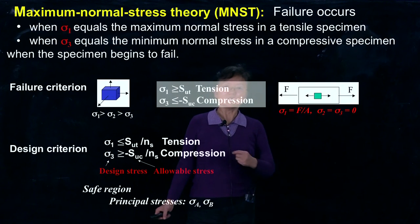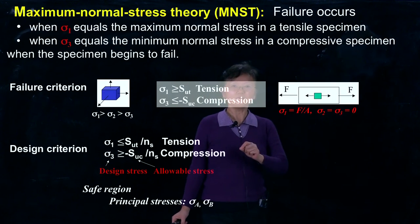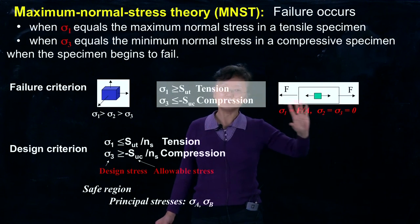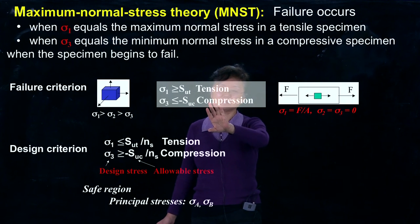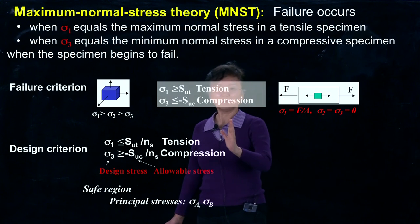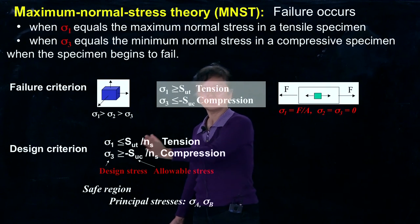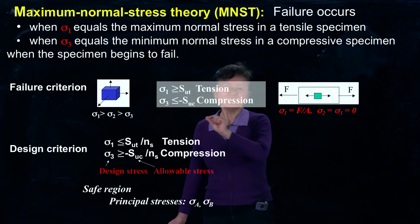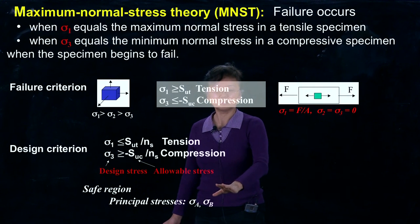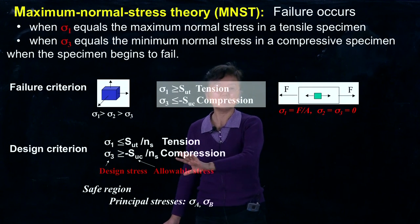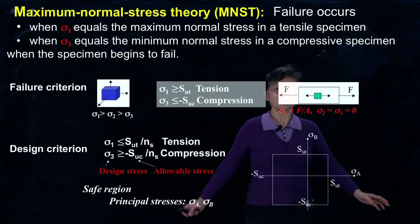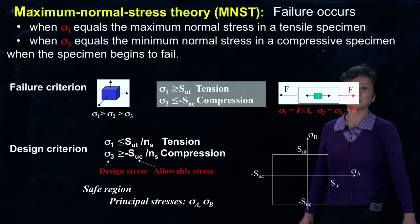What is the safe region? The safe region can be defined by the principal stresses. σ1 goes to the positive side, so we can allow σ1 to reach the ultimate strength. On the other hand, we allow σ3 to reach the ultimate strength in compression. However, rather than using σ1 and σ3, we use σA and σB. We allow σA and σB to continuously change from one direction to the other, giving us a regime or range of safe design.